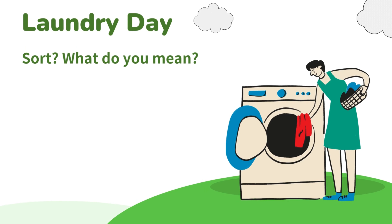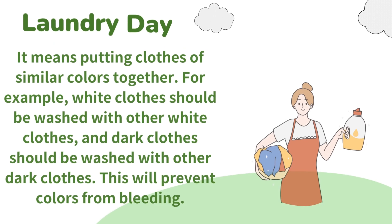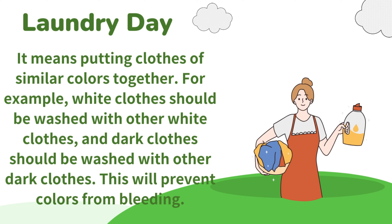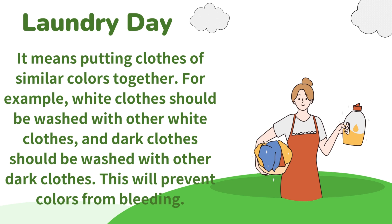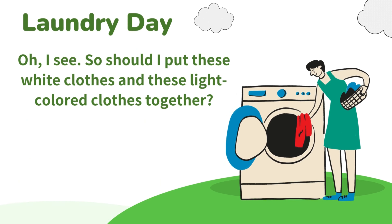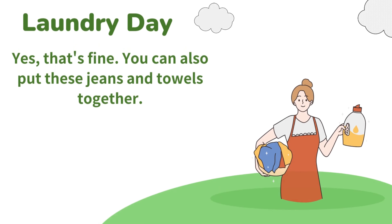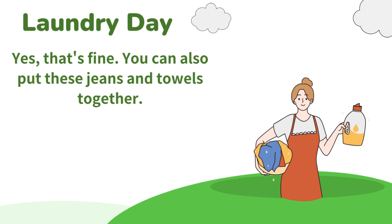Sort? What do you mean? It means putting clothes of similar colors together. For example, white clothes should be washed with other white clothes, and dark clothes should be washed with other dark clothes. This will prevent colors from bleeding. Oh, I see. So should I put these white clothes and these light-colored clothes together? Yes, that's fine. You can also put these jeans and towels together.